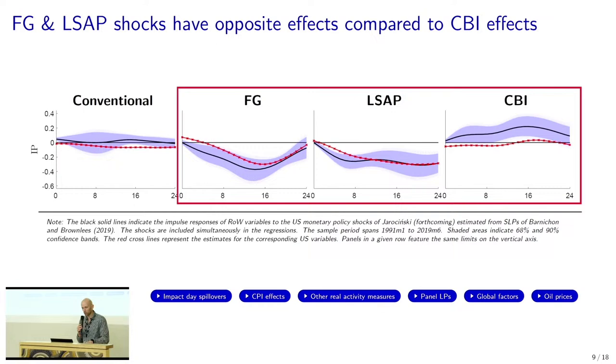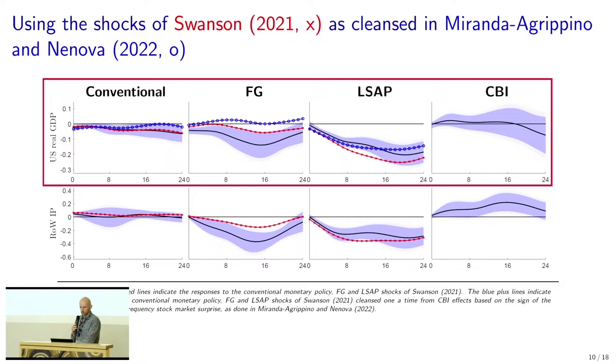Third observation: central bank information effects are expansionary, at least in the rest of the world — also expansionary in the US for unemployment, not for IP, but generally expansionary. This is important because we show in the paper that if you do not account for the central bank information effect when teasing out unobserved monetary policy shocks from observed asset price surprises, then this variation ends up in the forward guidance shock. You get a composite forward guidance shock that combines the variation of the central bank information effect and the true forward guidance shock. Because they have qualitatively opposite effects in macro data, you get attenuated estimates for this composite forward guidance shock. So in the following, I'm not going to show results for the conventional rate policy shock or the central bank information effect — we're just invested in the finding that if you don't account for it, you get implausible estimates for the forward guidance shock.